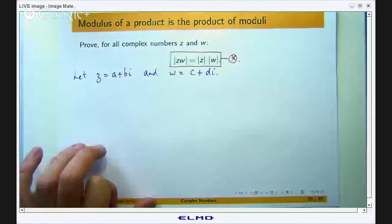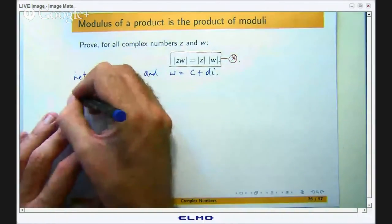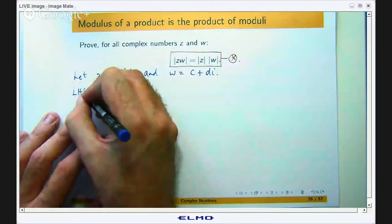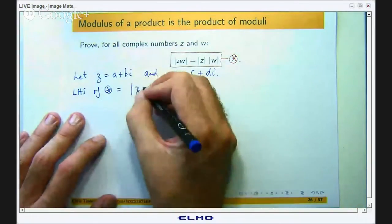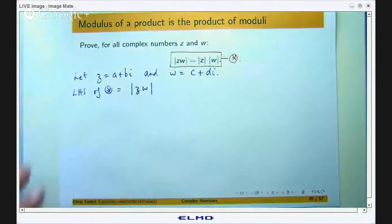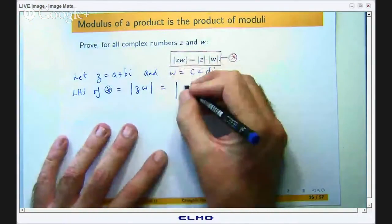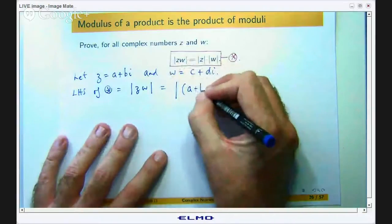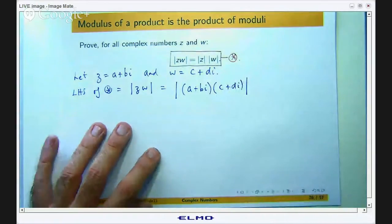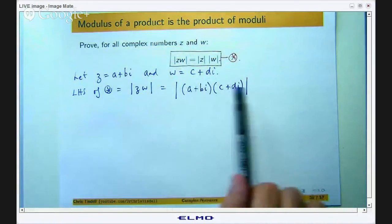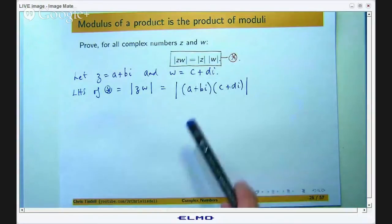Alright, so the left-hand side of star is just the modulus of the product of z with w. Okay, so let's write that out in the Cartesian form. What I'm going to do is try to simplify what's inside the modulus signs.